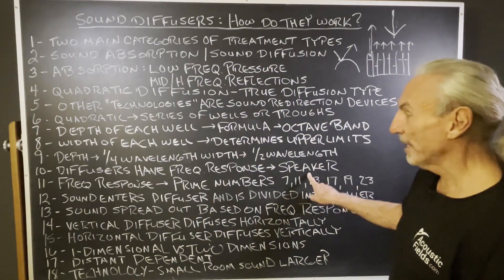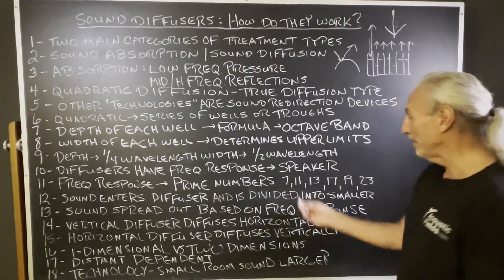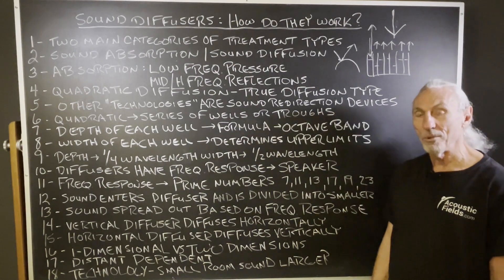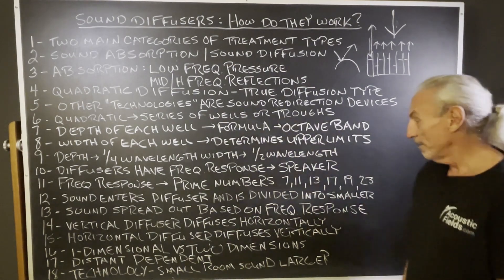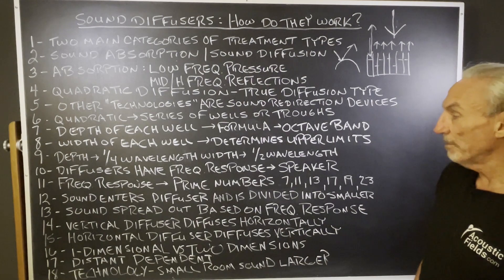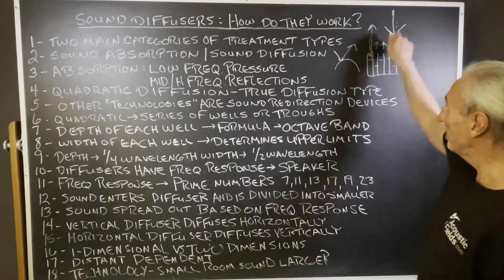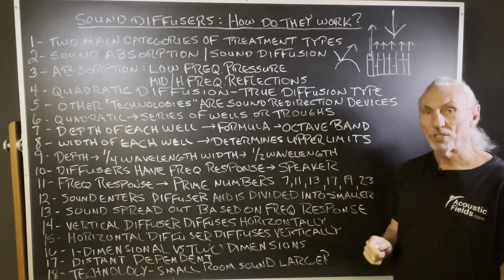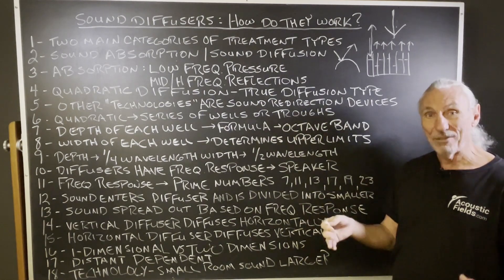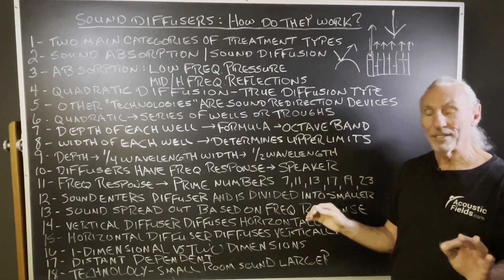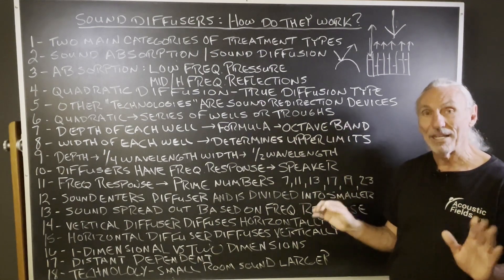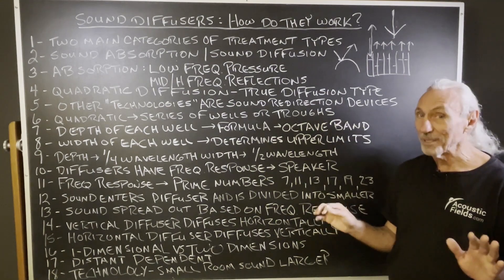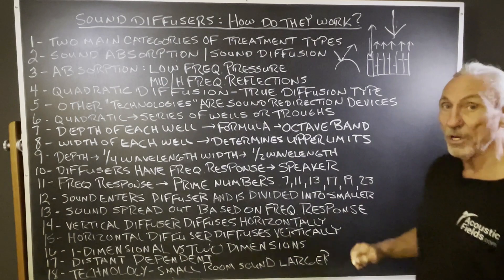Diffusers have a frequency response like a speaker and are based on prime numbers: 7, 11, 13, 17, 19, 23. There's a mathematical reason for that, which we won't go into in this video. Sound enters the diffuser and it's divided up — that's the easiest way to think about diffusion. It takes big sound and breaks it up into little pieces. It's not a technically accurate way to say it, but for purposes of illustration and understanding, that's what goes on.